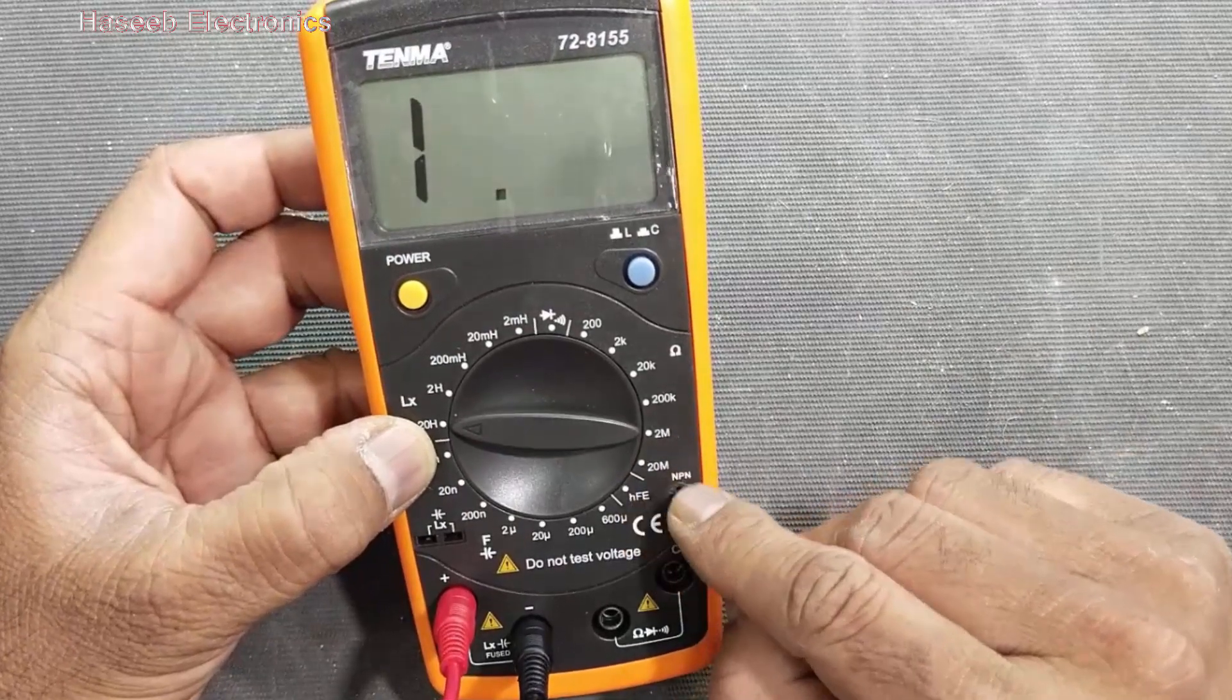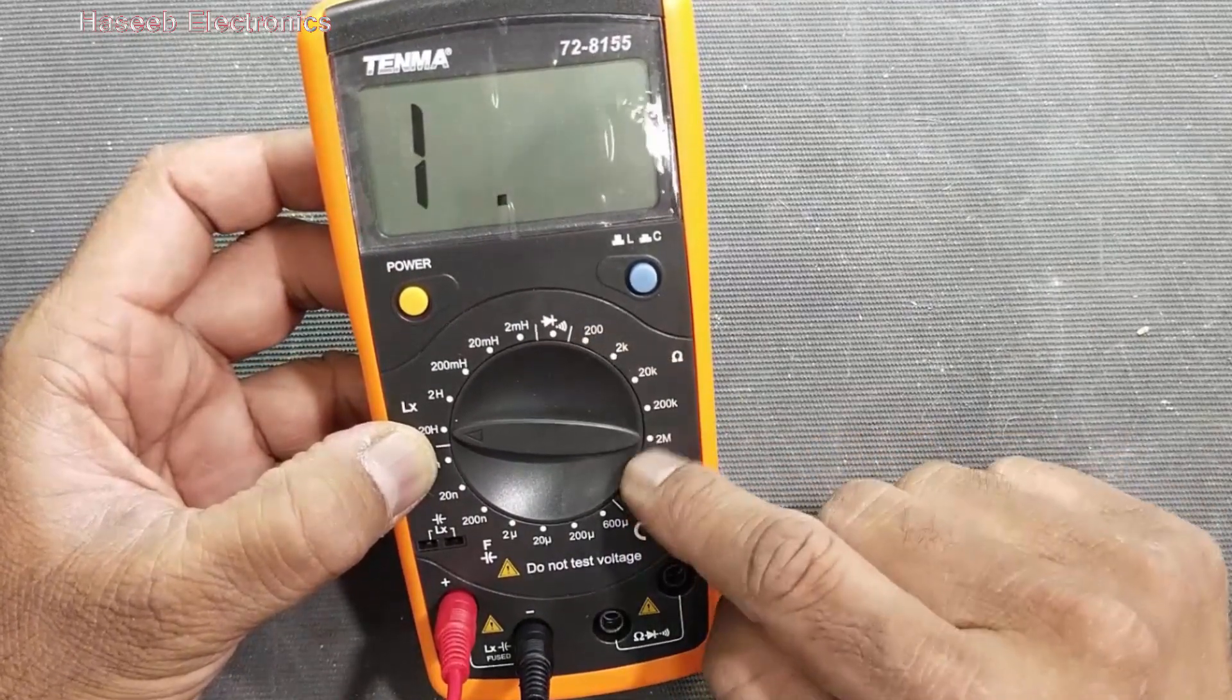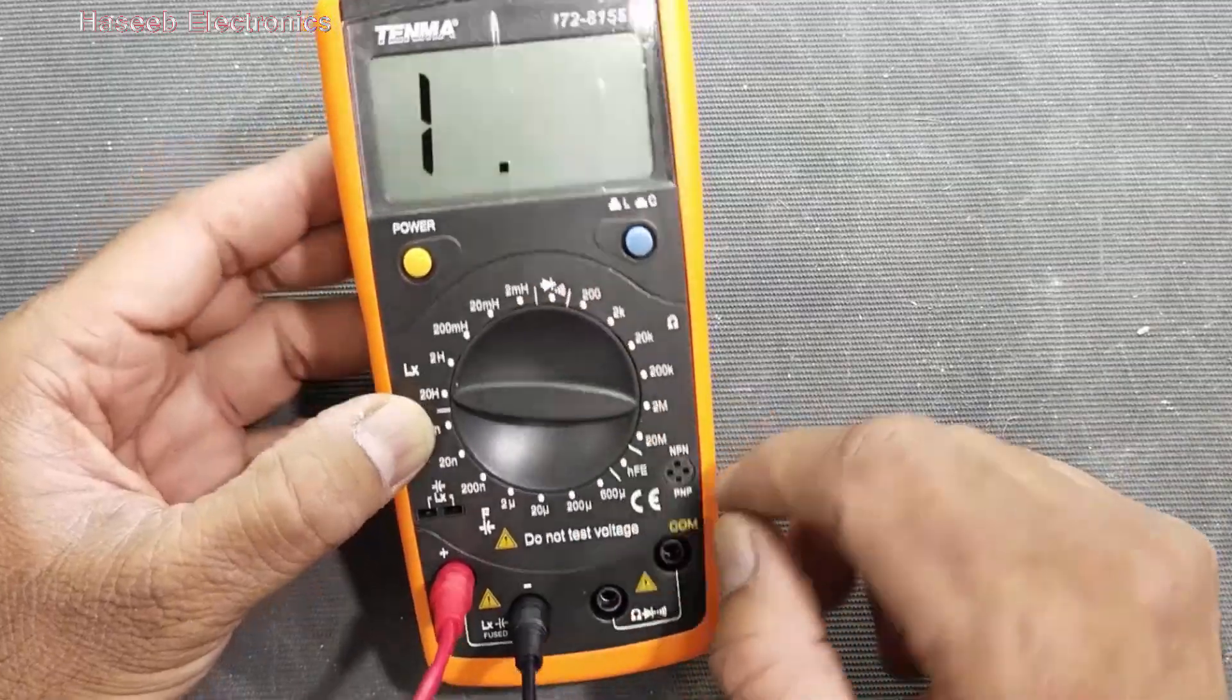Then we have gain and here we have up to 20 megaohms resistance. Here we have continuity and diode mode.